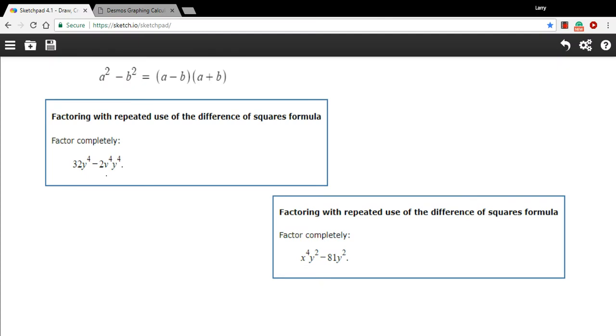In these problems, we are factoring some polynomials, and we're applying the difference of squares formula, which is up here for a reminder: a squared minus b squared equals a minus b times a plus b. And the trick about these problems is that you can apply this formula more than once to factor it more completely.